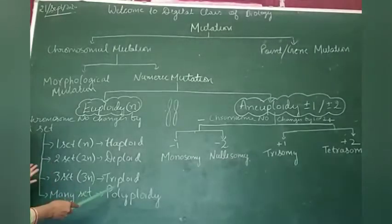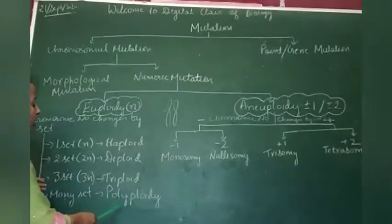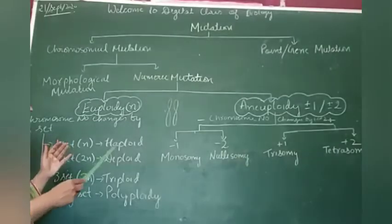Haploid consists of only one set, diploid two sets, triploid three sets. It can be four sets, that is tetraploid. And when there are many sets, it is known as polyploid. Poly stands for many.